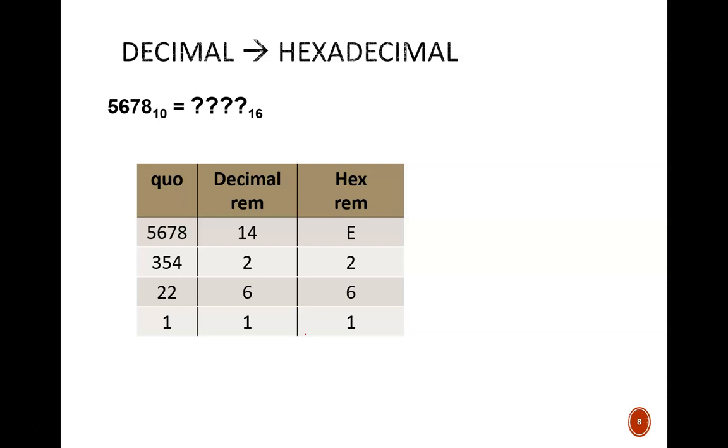All right. And then one last example here. From decimal into hexadecimal. So similar to binary with the repeated divide by 2 method, I'm now going to apply the repeated divide by 16 method, since we're going to hexadecimal. So my given number is 5,678. I write that in the top left corner.